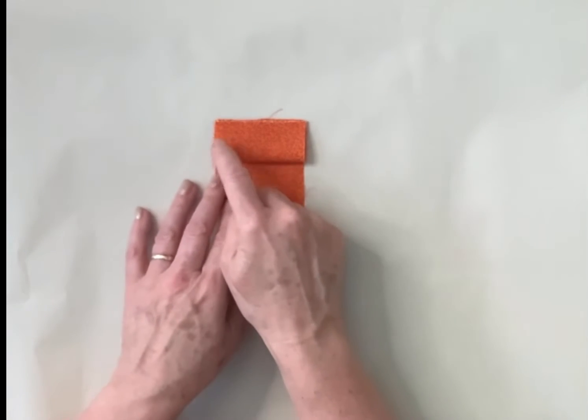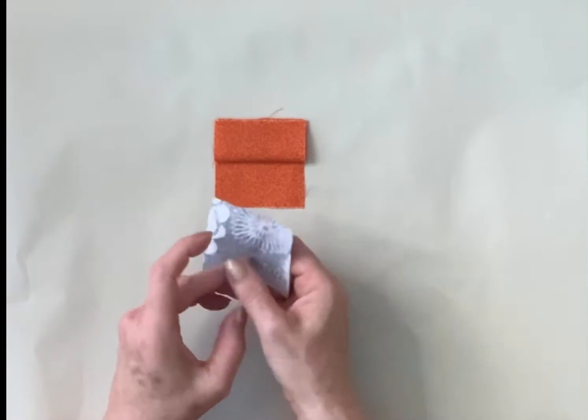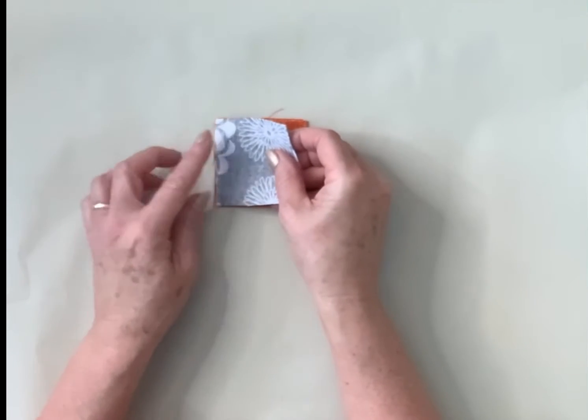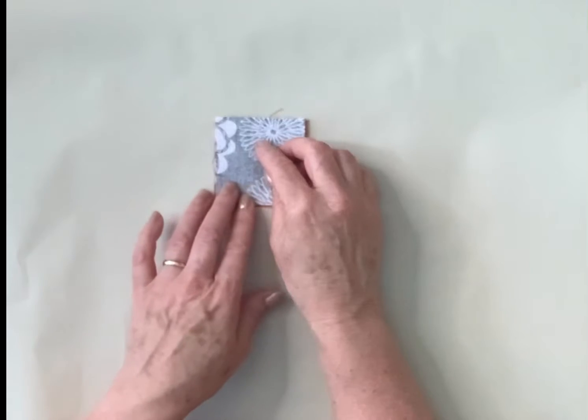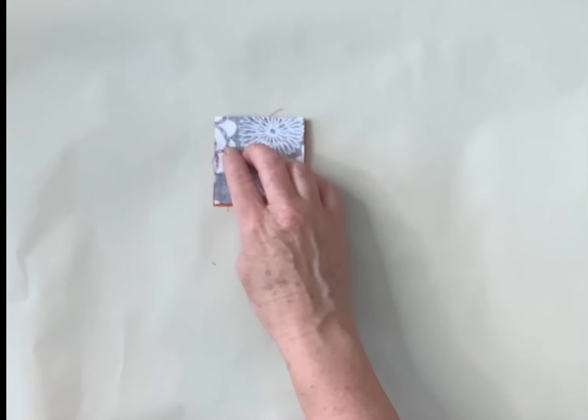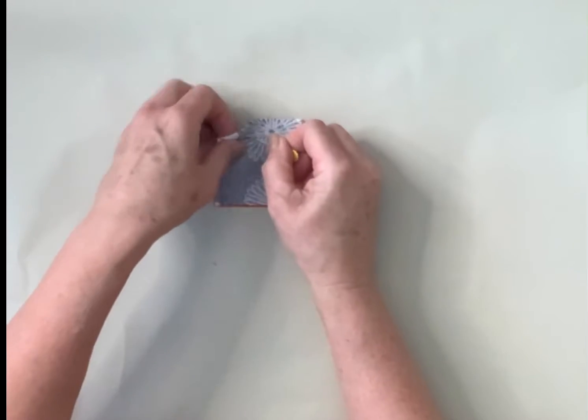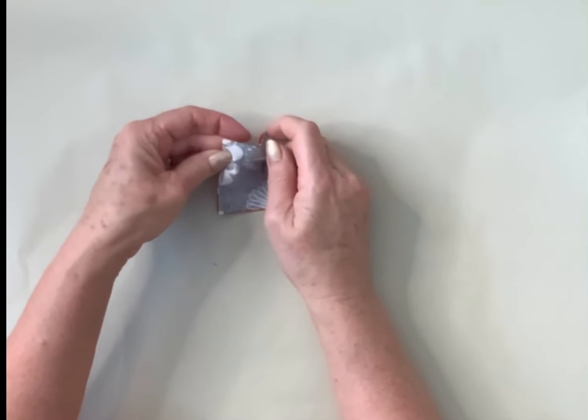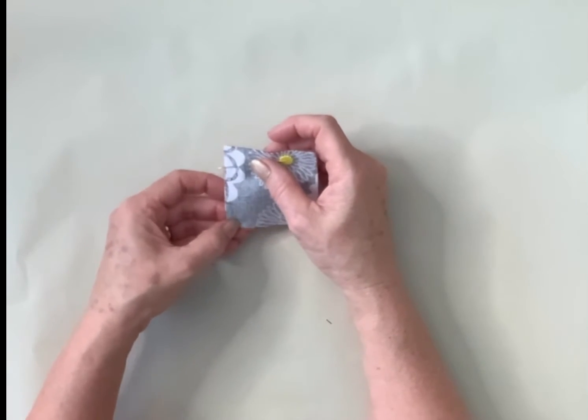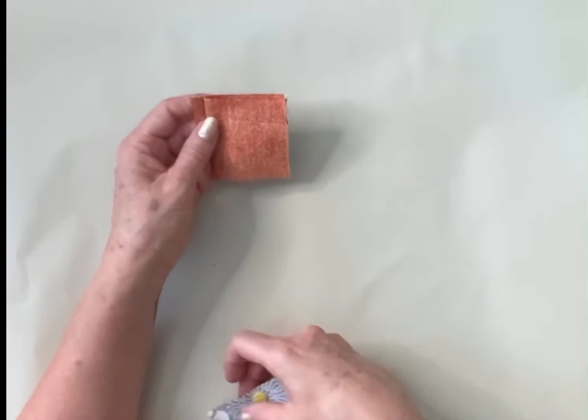This is the edge that we're going to start sewing. We're going to take one of the pieces of the background and place it on top and then I tend to pin because it makes it easier and then we sow down here with a quarter of an inch seam allowance.